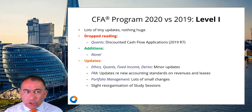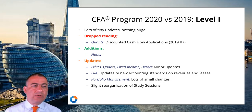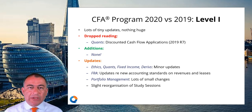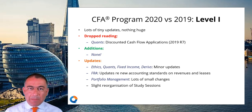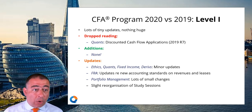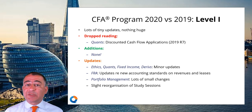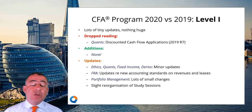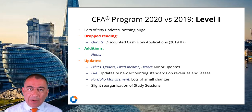In Quants, there's a new test of the correlation coefficient and scatter charts have been introduced. Fixed income has a bit of a mention on negative interest rates, which is pretty well the norm in many parts of the world these days. Derivatives has some more calculations on options at expiration and on forward prices. In FRA, there are new accounting standards on revenues and leases, so you need to know a little bit about them.